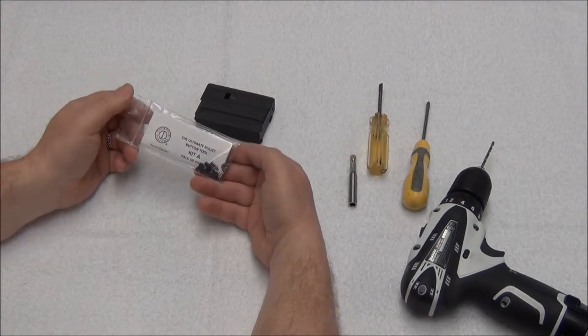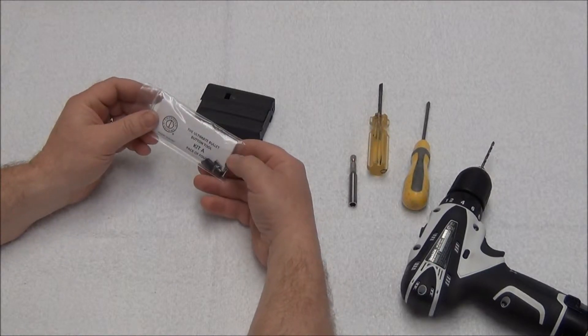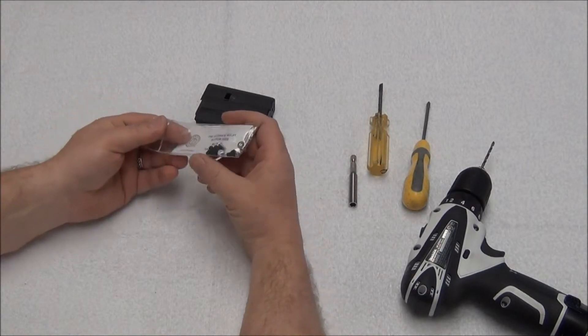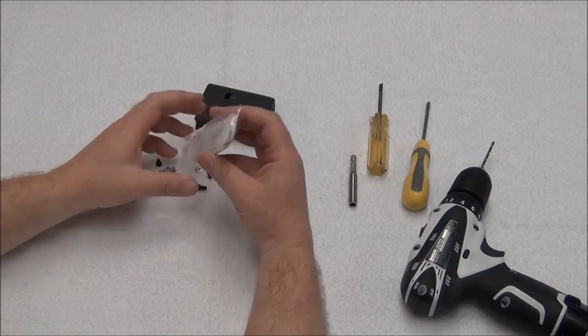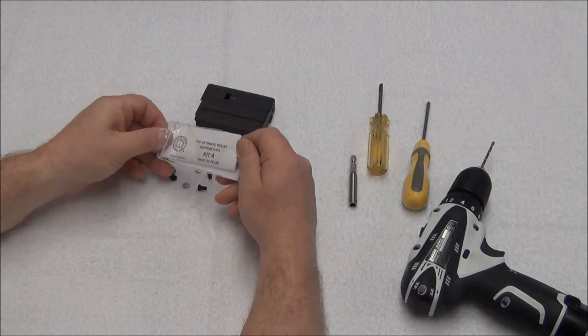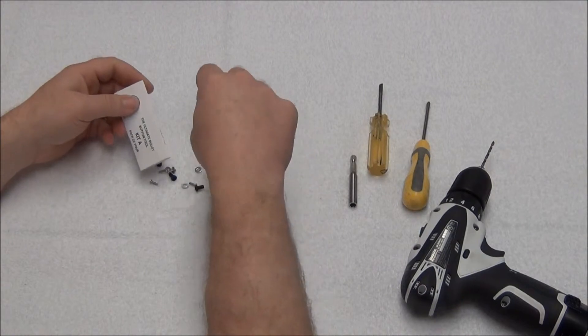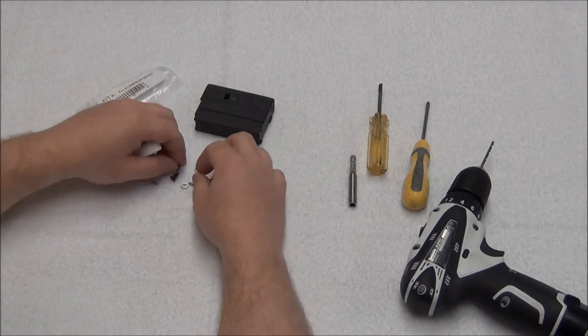This is your A-Kit here. It has enough parts in it to do four magazines. Let's dump them all out here on the table. And there you go.